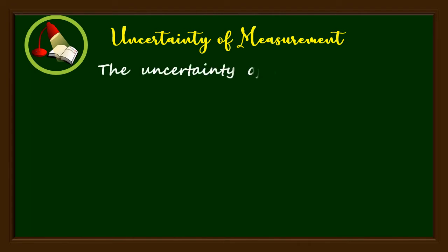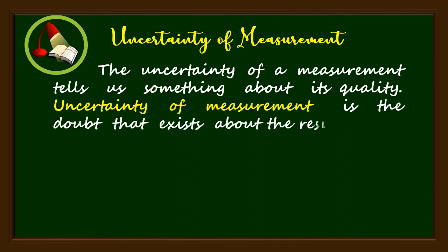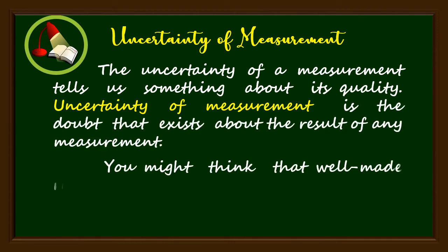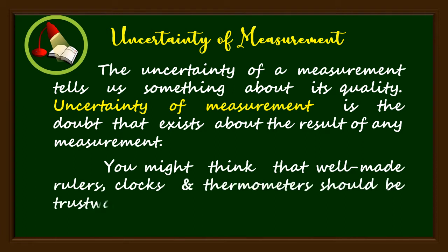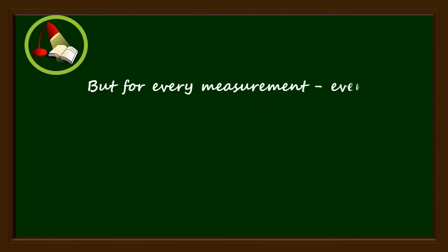The uncertainty of a measurement tells us something about its quality. Uncertainty of measurement is the doubt that exists about the result of any measurement. You might think that well-made rulers, clocks and thermometers should be trustworthy and should give the right answers. But for every measurement, even the most careful, there is always a margin of doubt.